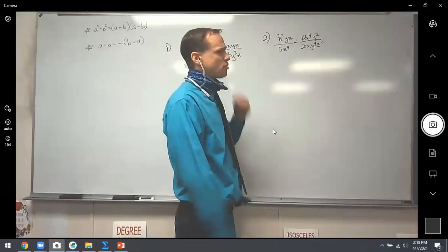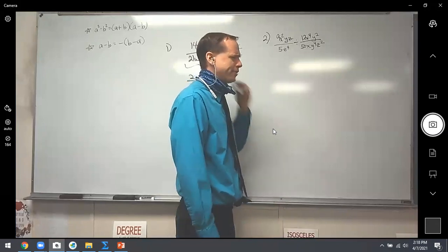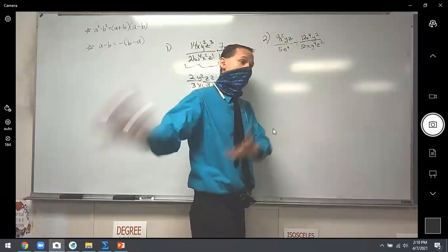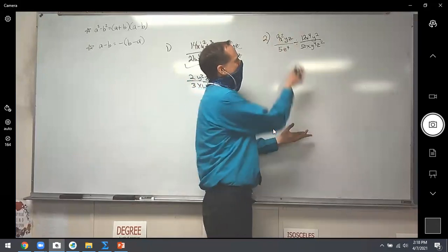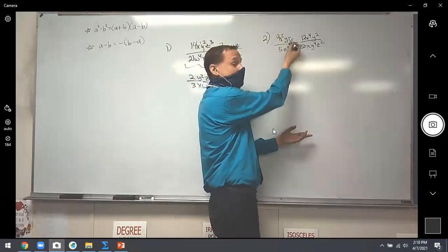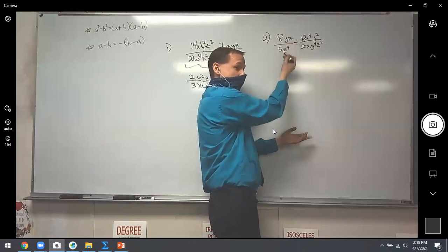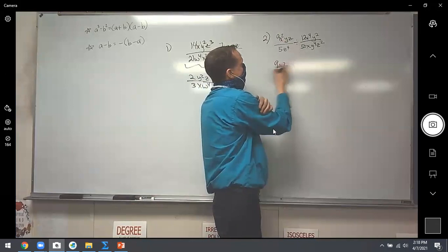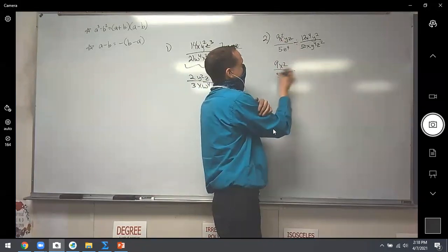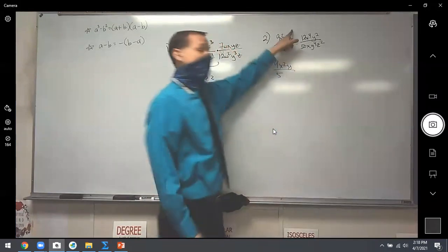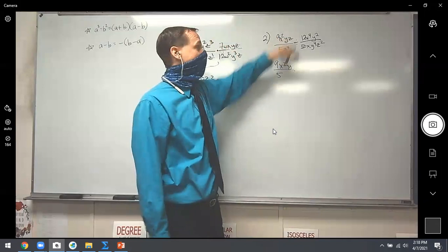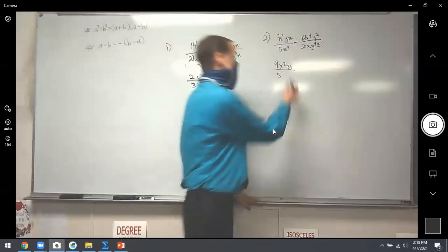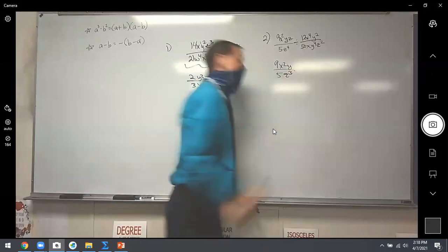Let's try this one — it's a division problem. What do you do with a division problem? Keep, change, flip — you just turn it into a multiplication problem. Is there anything I can simplify right away? Maybe the Z's. Nine and five don't play nice together, so we'll just simplify the Z's right now. You had one Z on top and four on bottom — one minus four is negative three — which means there's a Z cubed on the bottom right there.